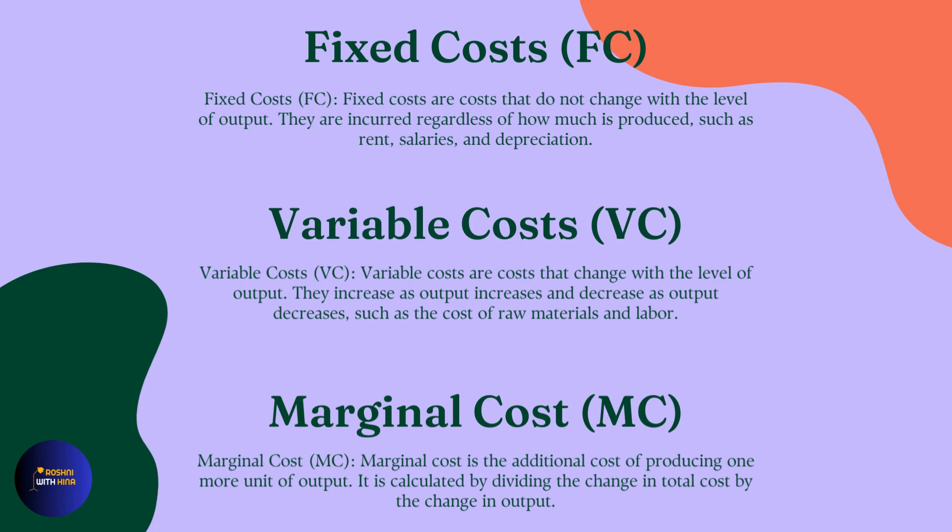Variable Cost, abbreviated as VC. Variable costs are costs that change with the level of output. They increase as output increases and decrease as output decreases, such as the cost of raw materials and labor.